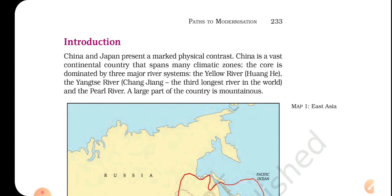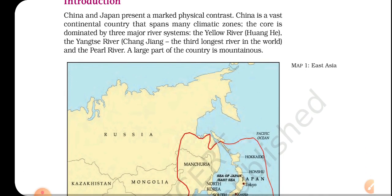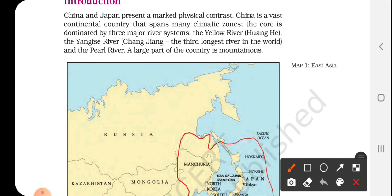Do you know how physically different these two countries are? Now we will talk about that topic. China and Japan present a marked physical contrast — this is a very important line. This also includes a very important question: discuss the marked physical contrast between China and Japan. Write this question in your notebook as well, and the answer we are going to discuss now.